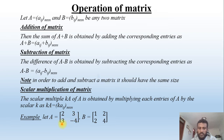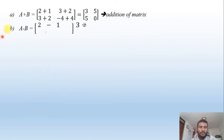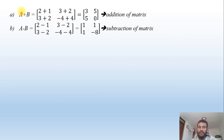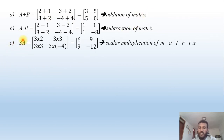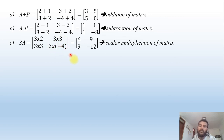For example, let A = [2, 3; 3, −4] and B = [1, 2; 2, 4]. Then A + B = [2+1, 3+2; 3+2, −4+4] and A − B = [2−1, 3−2; 3−2, −4−4] = [1, 1; 1, −8]. For scalar multiplication, multiplying A by 3 gives 3A = [6, 9; 9, −12].